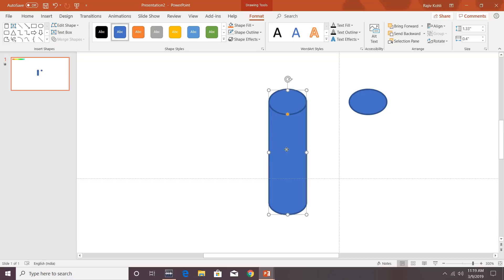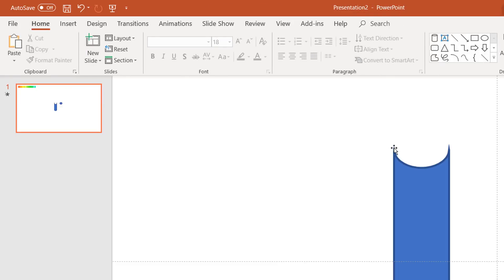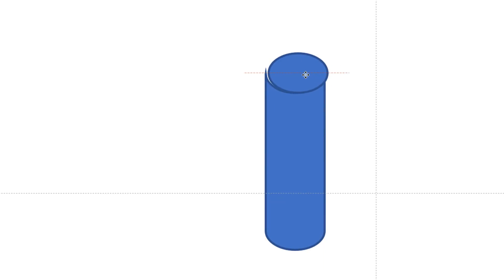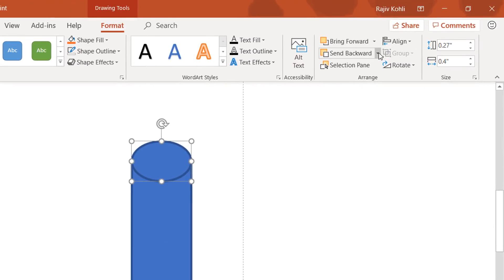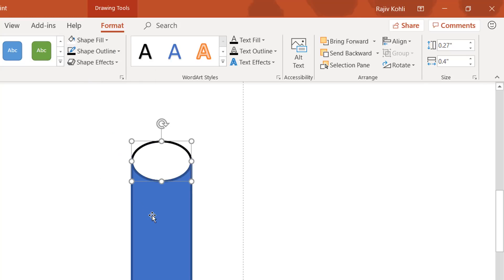Select the pipe first, then hold Shift and select the oval on top. On the Format tab, click the Merge Shapes drop-down and choose Subtract — it should look like a pipe opening. Now place this oval on the face of the pipe so both objects form a single pipe. You must send this pipe face to the back of all objects — from the Format tab, click Send Backward > Send to Back. Then choose a white shape fill and black outline for both the face and body of the pipe.